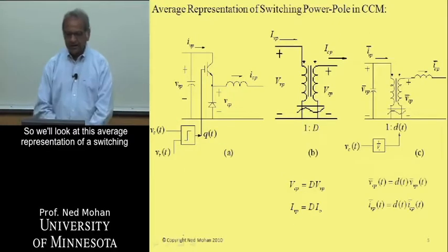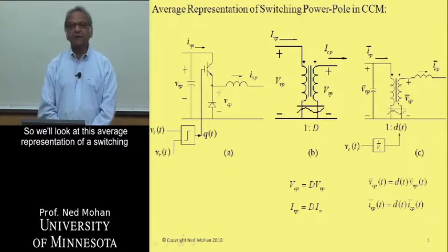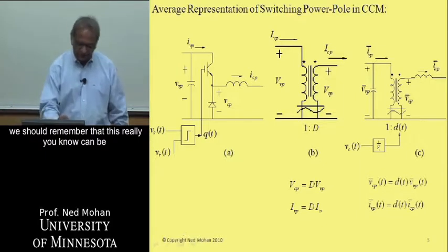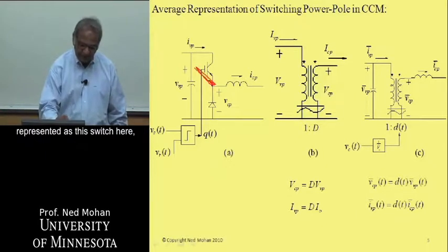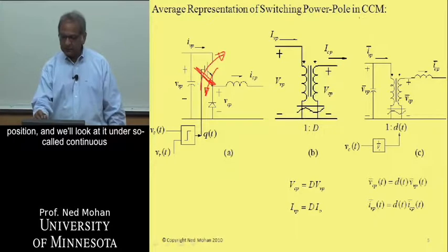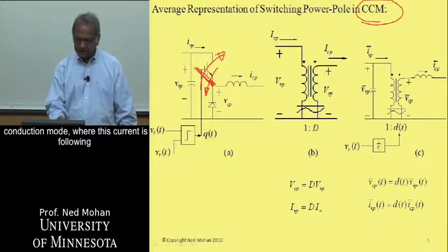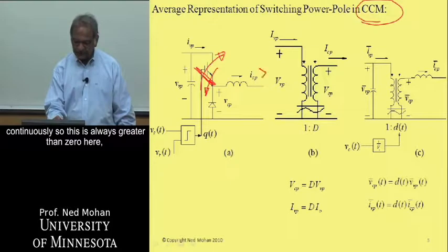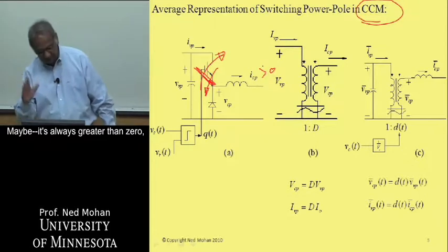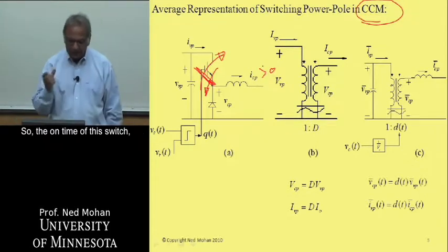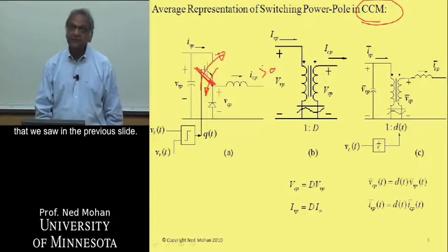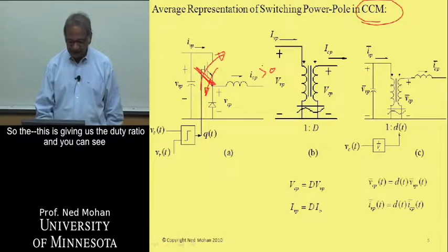Let's look at the average representation of a switching power pole in CCM — continuous conduction mode. This switch is either in the up position or the down position, and the inductor current is always greater than zero. The on-time of the switch in the up position is dictated by the duty ratio comparison we saw previously, giving us the duty ratio D.